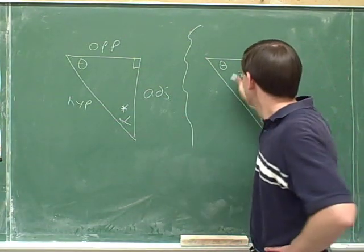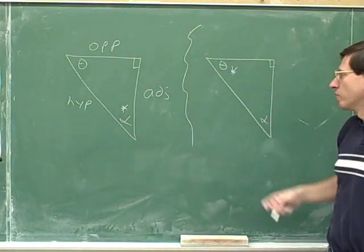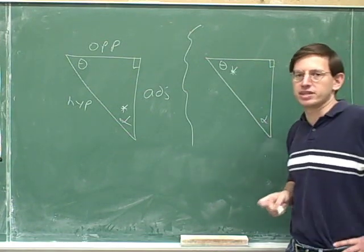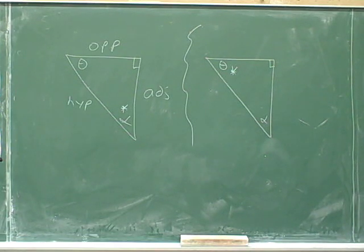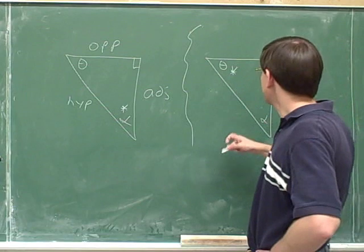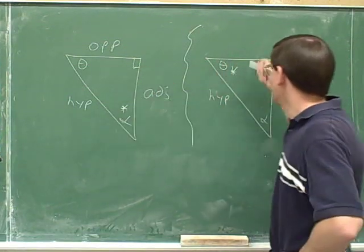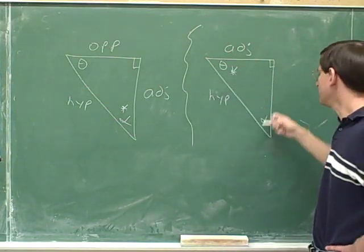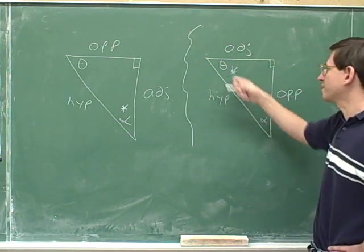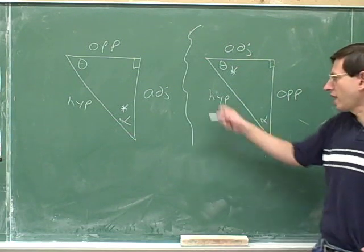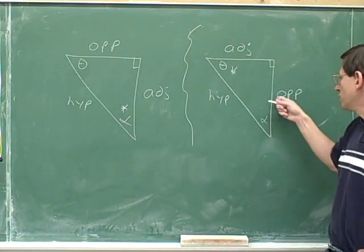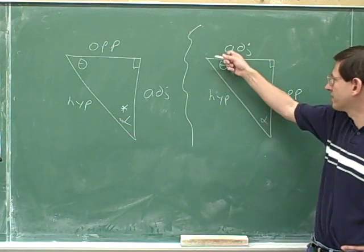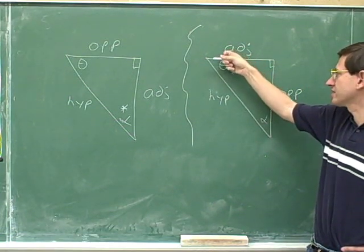This is the same exact triangle as before, but now I'd like you to focus on theta. So focusing on theta, please label the hypotenuse, opposite, and adjacent sides. The hypotenuse is the same as before — opposite to the 90-degree angle. But now it's the horizontal side that's adjacent to the asterisk, and it's the vertical side that is opposite to the asterisk. I'm using HYP as an abbreviation for hypotenuse, OPP as an abbreviation for opposite, and ADJ as an abbreviation for adjacent.